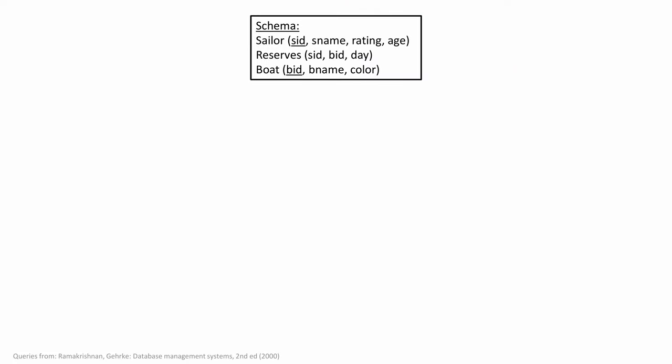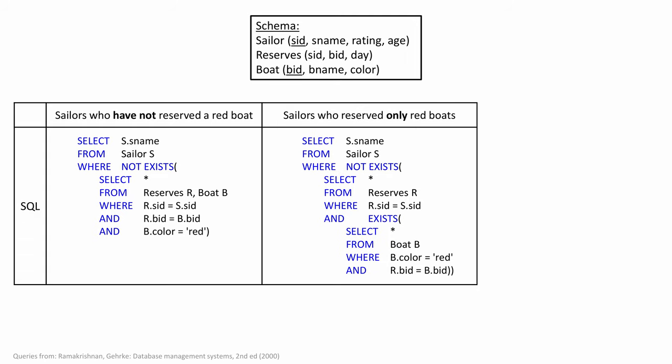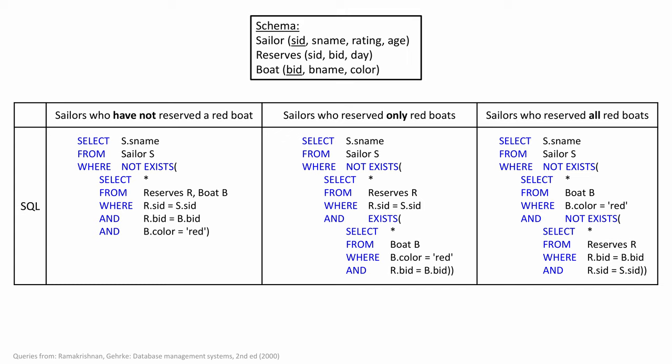Even though SQL is powerful and ubiquitously used, it is often challenging to read and understand. Consider the following set of SQL queries over the widely used Sailor-Reserves-Boat schema from the Database Management Systems textbook by Gurke and Ramakrishna, where sailors make a reservation on some day for a boat that has a certain color. These queries find sailors who have not reserved a red boat, sailors who reserved only red boats, and sailors who reserved all red boats respectively. Even for such simple queries, it takes effort to read and understand them. Extracting similarities and differences in logic through a quick glance over SQL is difficult.